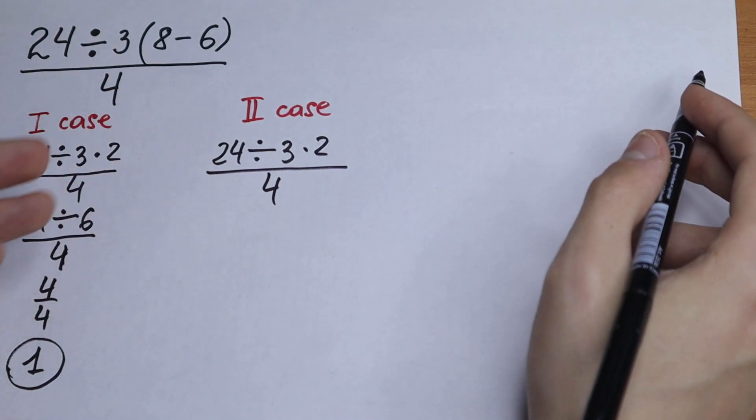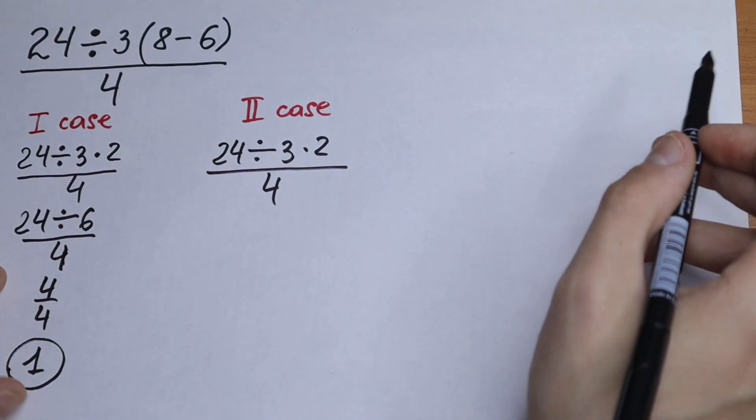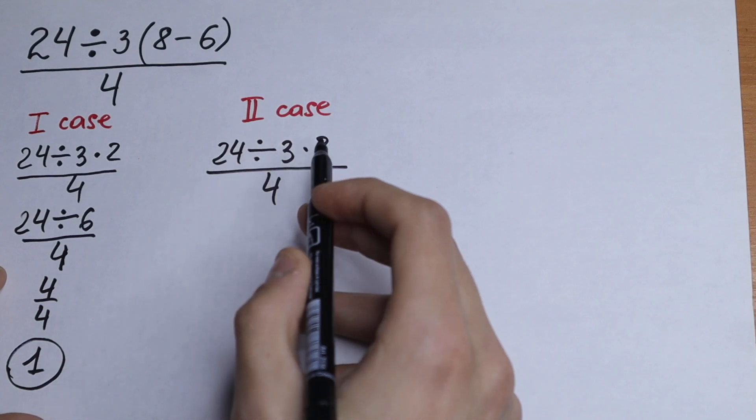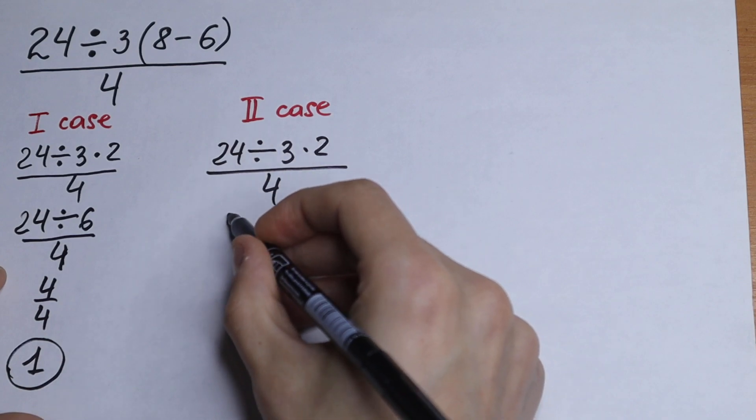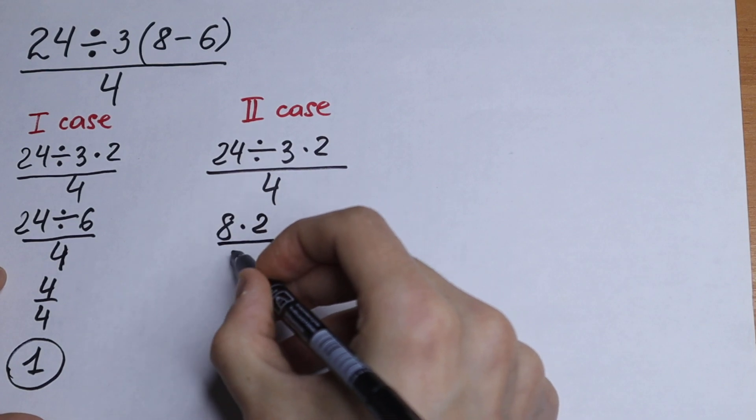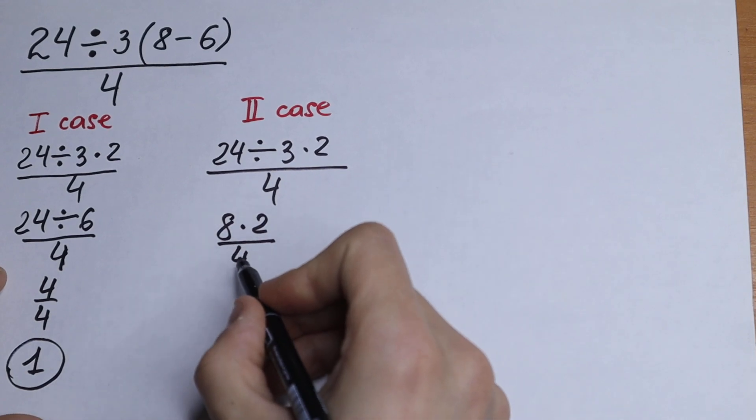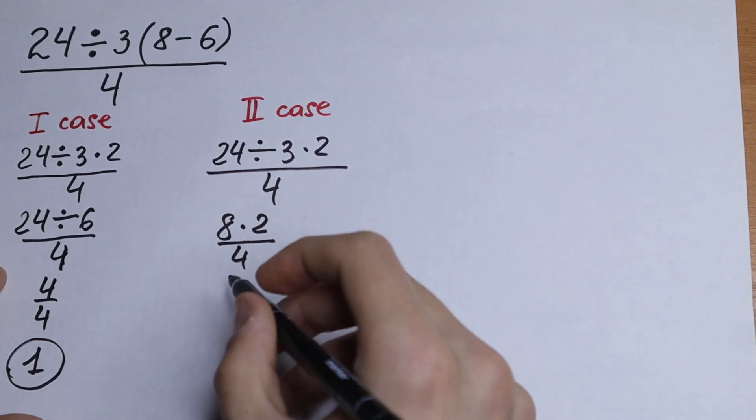So division and multiplication have the same priorities. So we can divide this. 24 divided by 3, it will be equal to 8. So 8 times 2 over 4. 8 times 2 will be 16. 16 over 4, it will be 4.